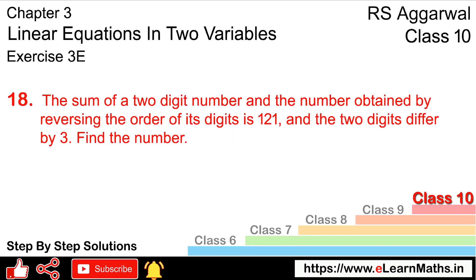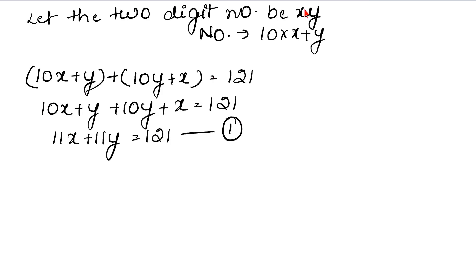In the second equation, he is saying the two digits differ by 3. It means the difference of these two digits is 3. So x minus y equals 3. Here comes our second equation.